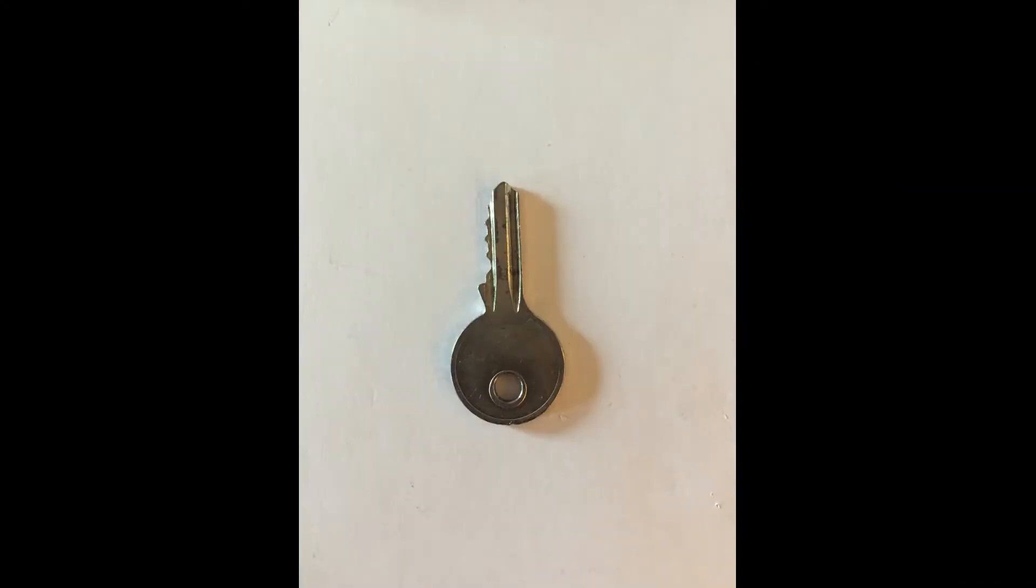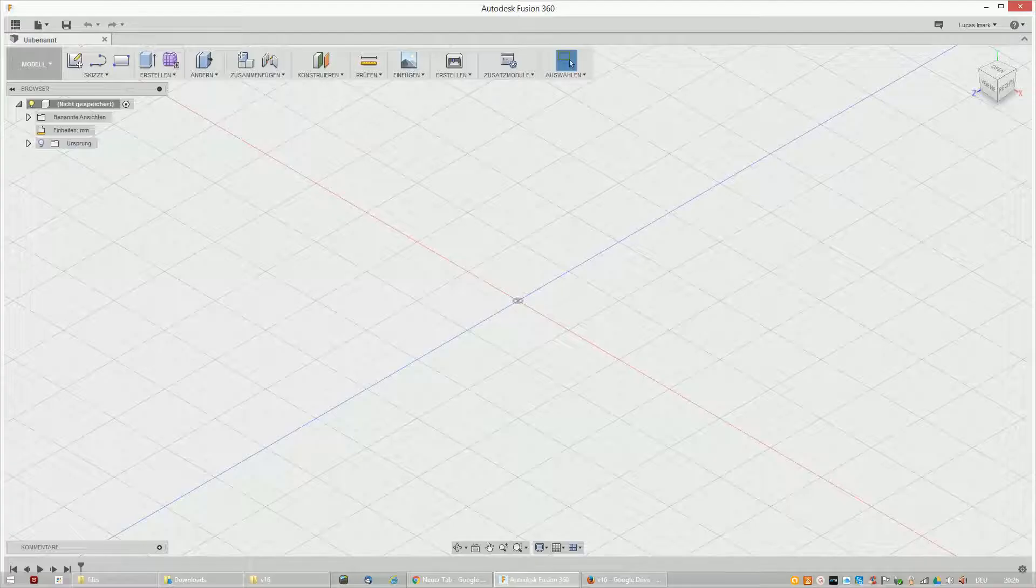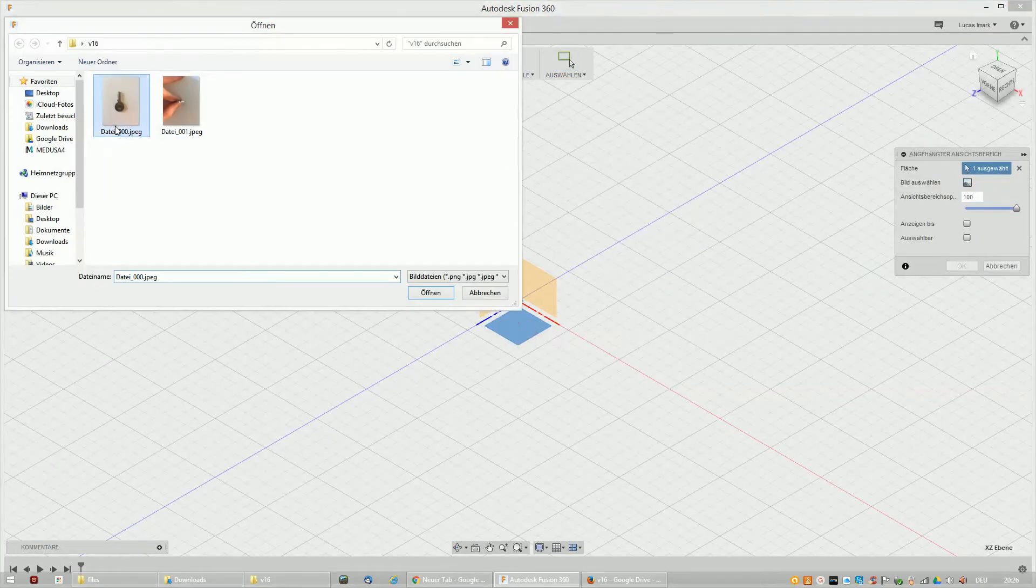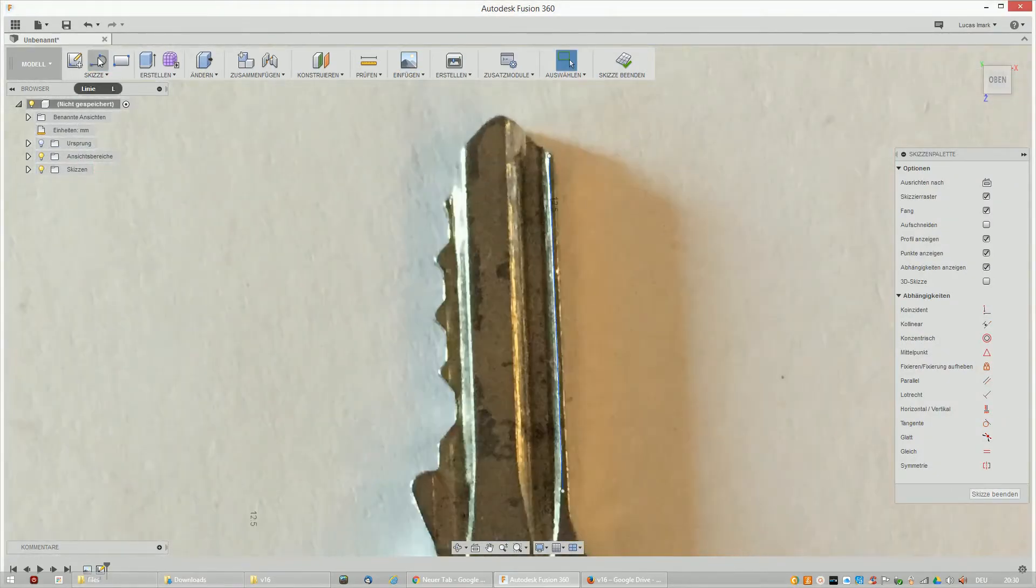Let's jump right into it. I first imported both key pictures I took from this ordinary lock key. Then I positioned them precisely enough and then I drew the contour.